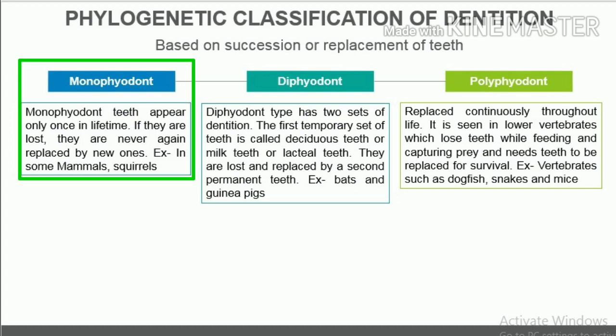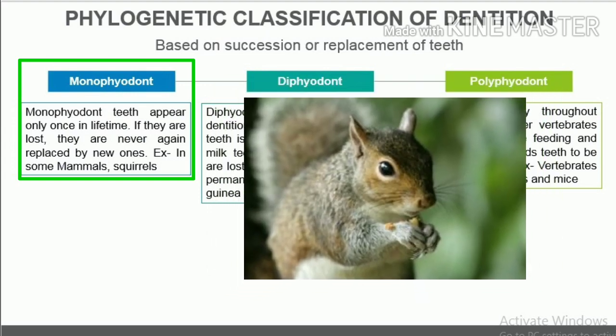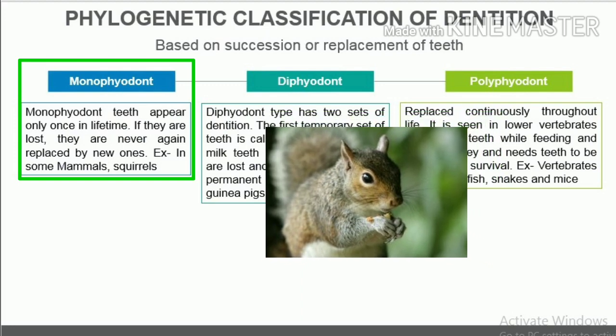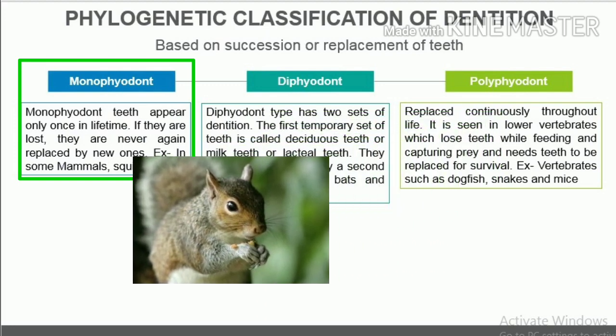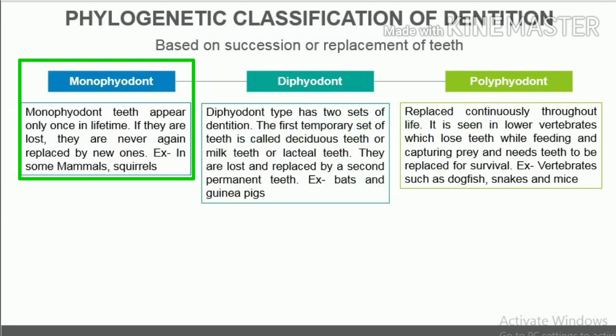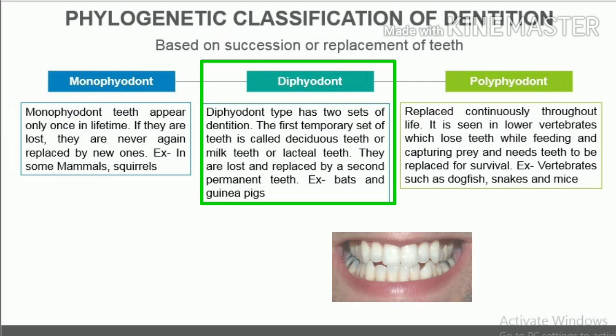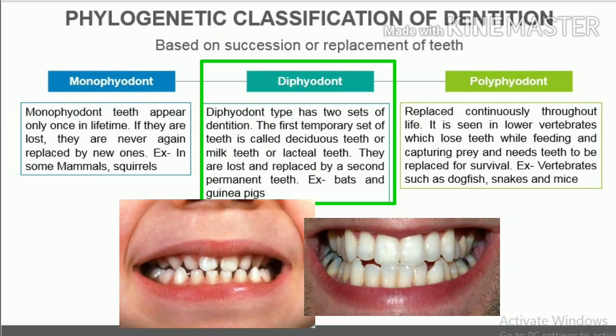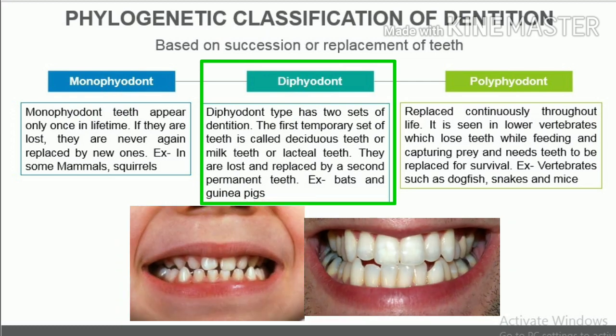Monophyodont teeth appear only once in a lifetime. If they are lost, they are never again replaced by new ones. For example, in some mammals like the squirrel, only one set of teeth develops in their lifetime.